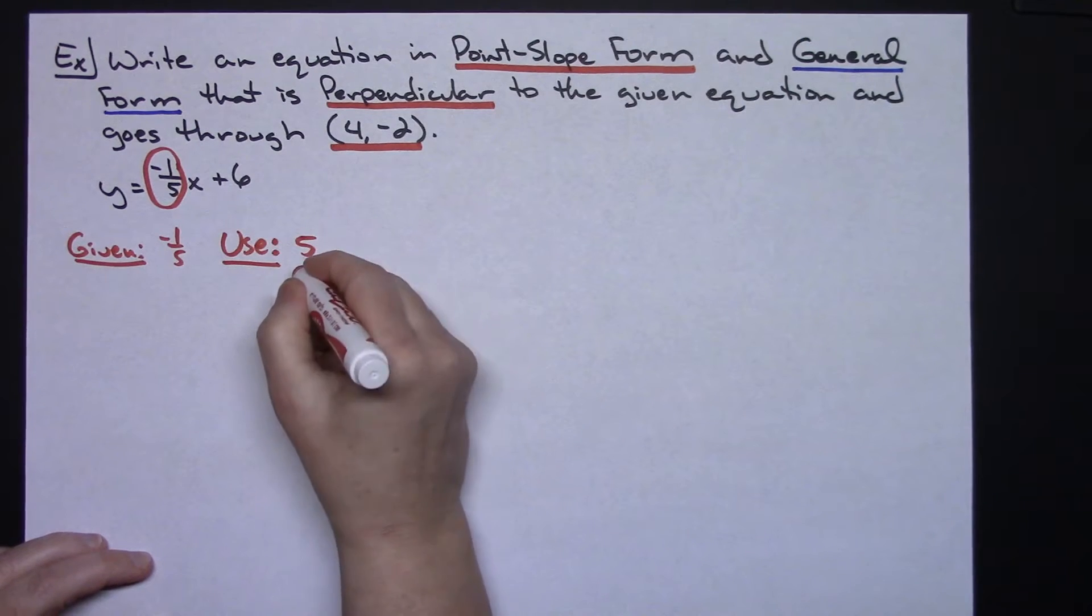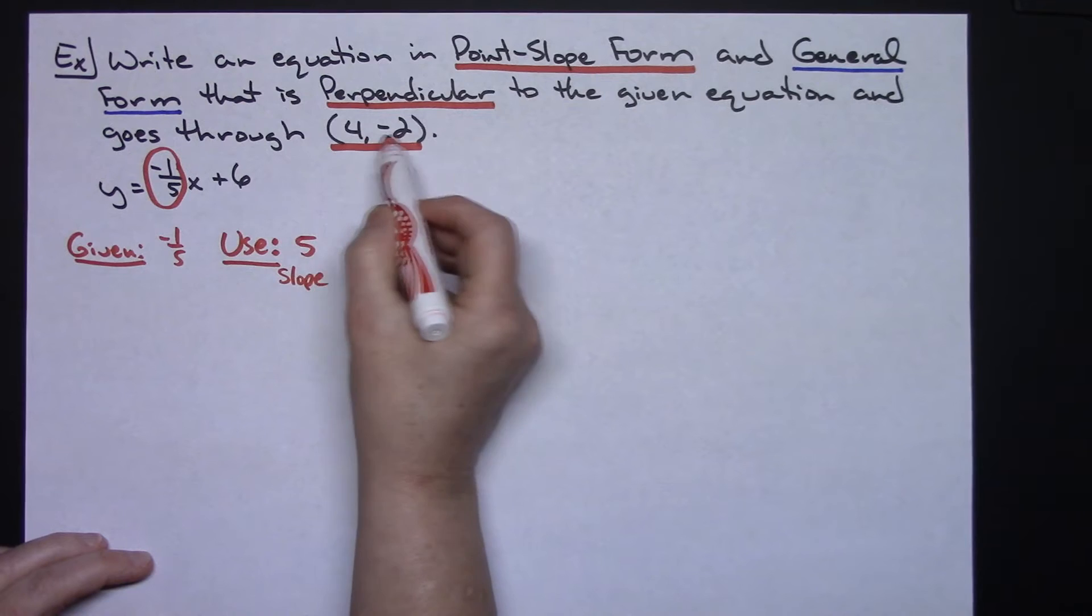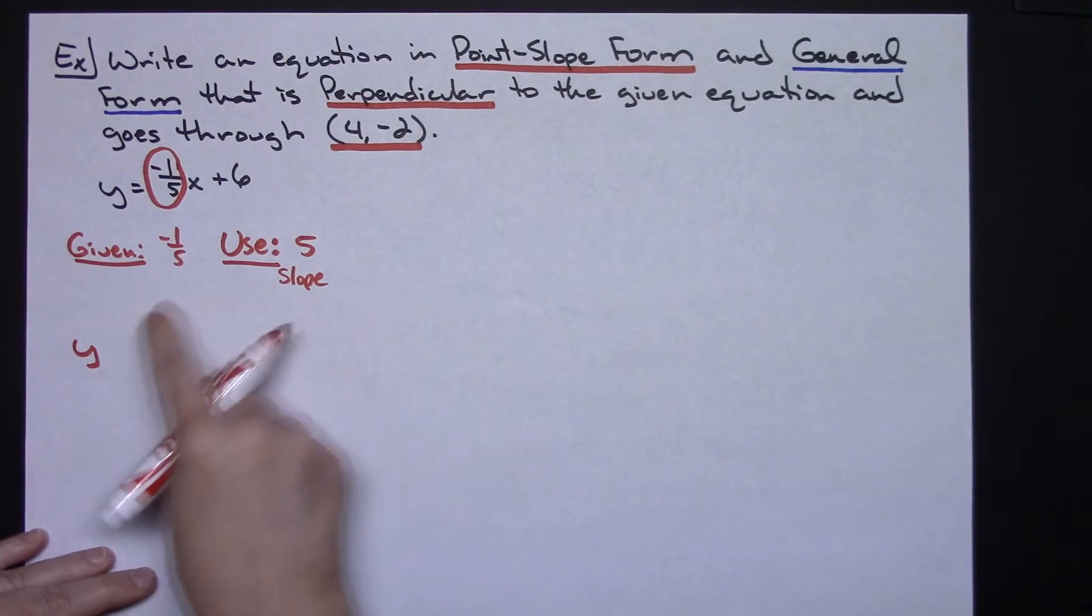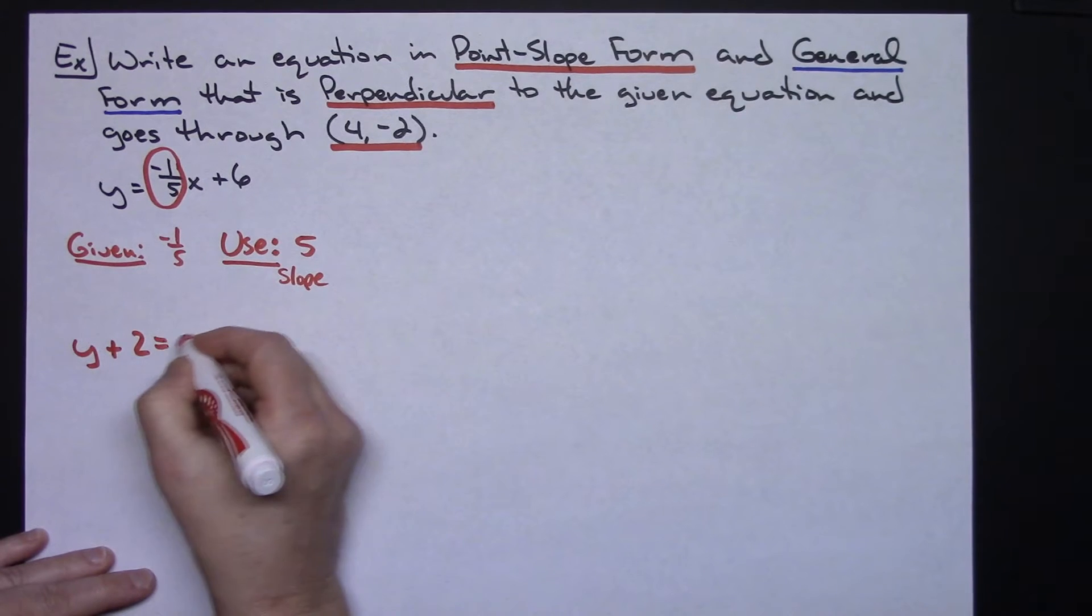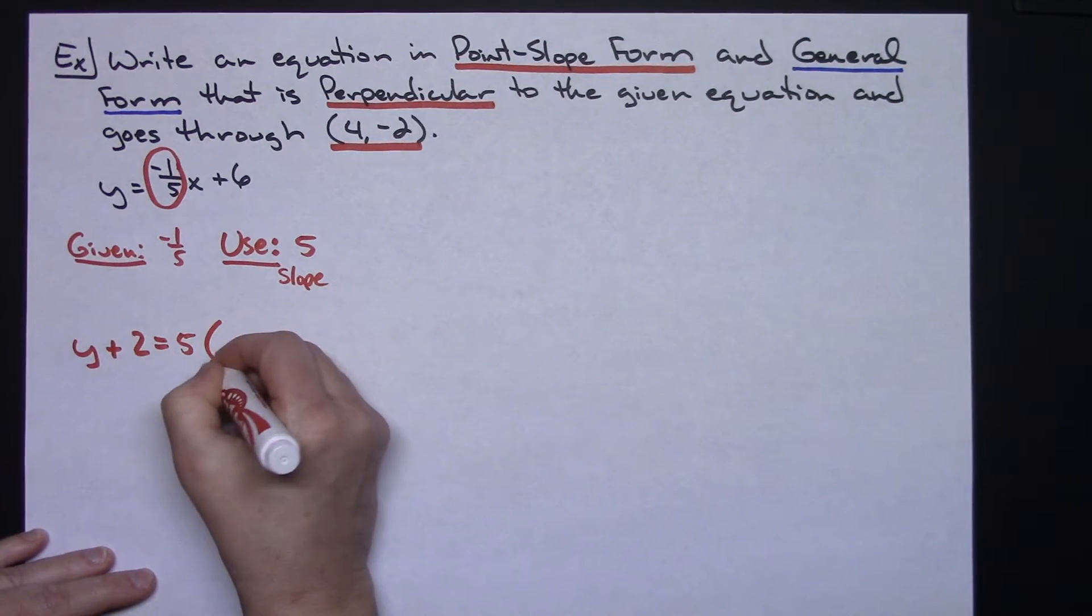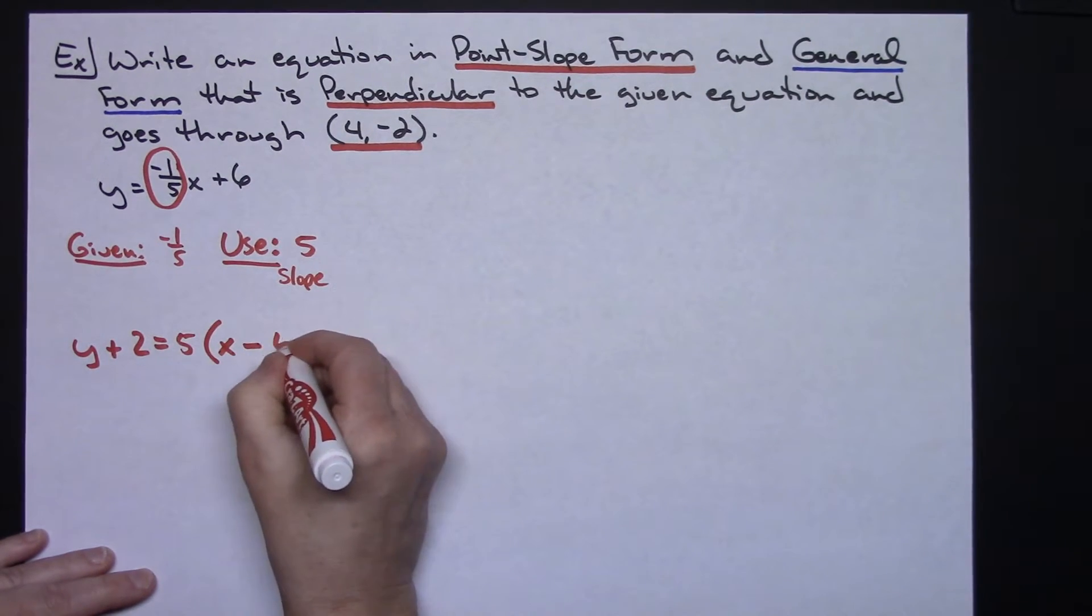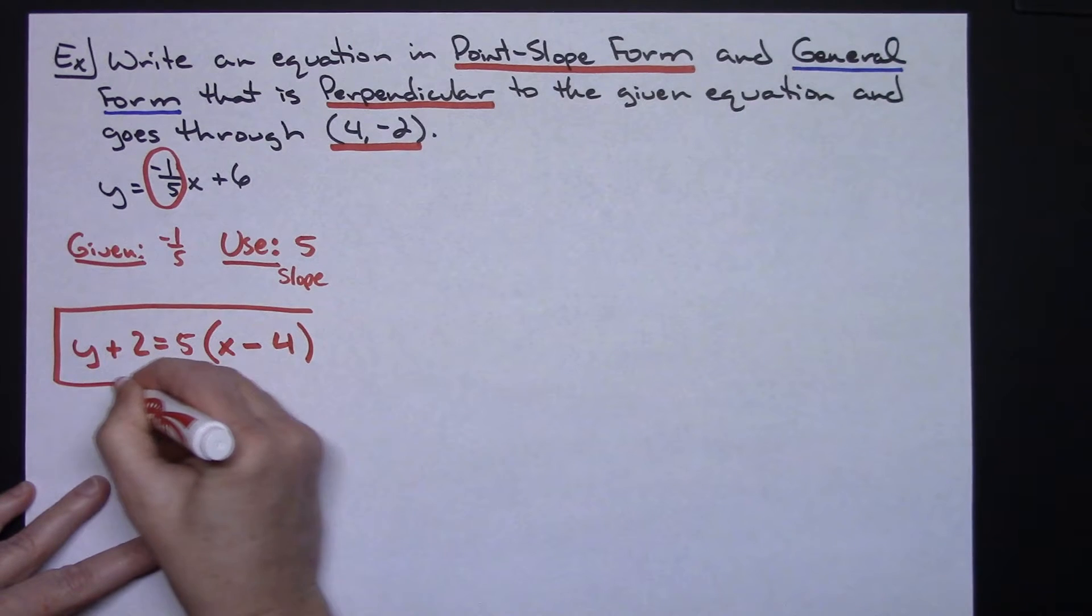So I'm going to use 5 as my slope of my new equation and I'm going to use that point (4, -2). So from there I can do y. Now remember it's the opposite of what these look like, so it's a negative 2, so I'm going to put a plus 2 equals 5 times the quantity x. It's a positive 4 here so I want a minus 4 there. So that is my point-slope form.